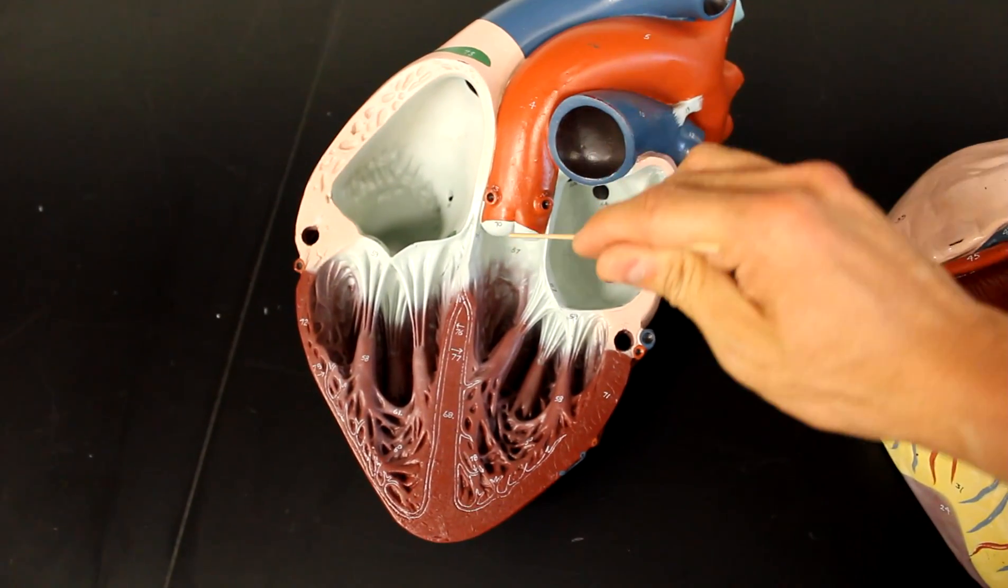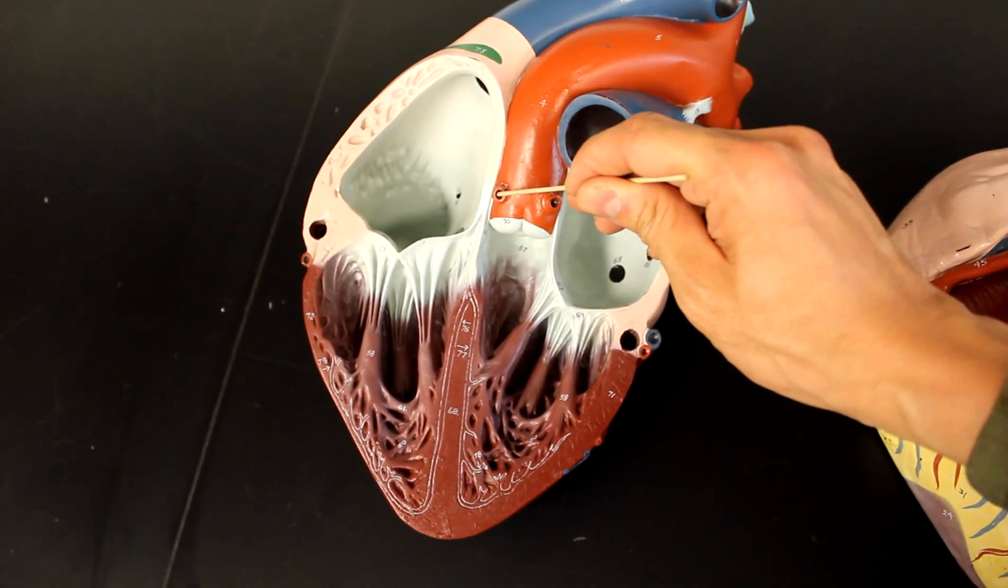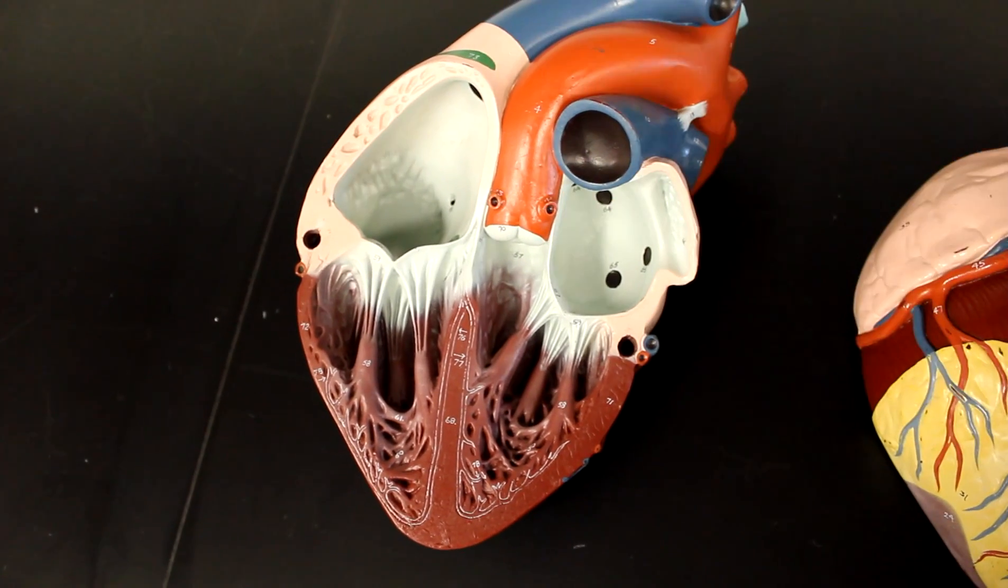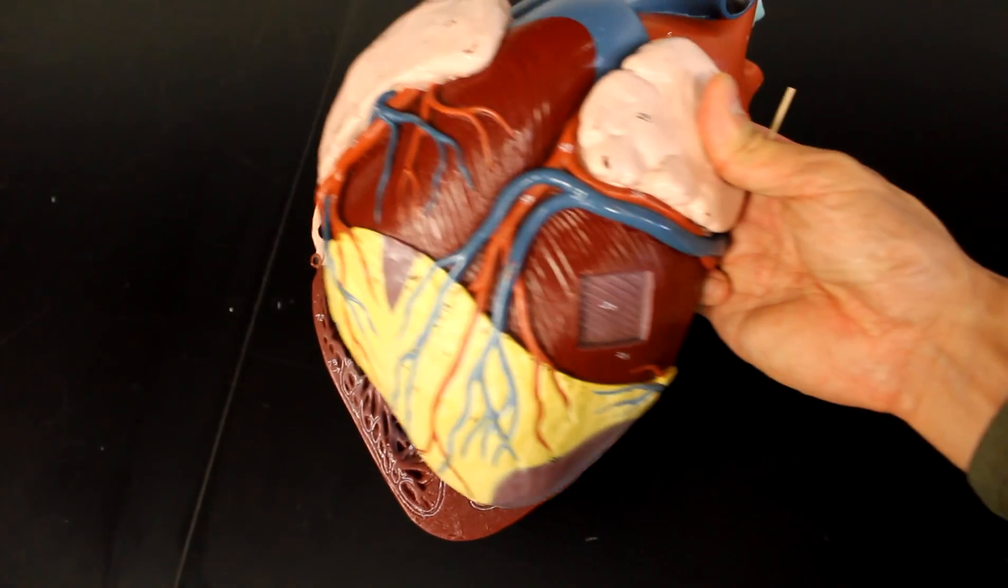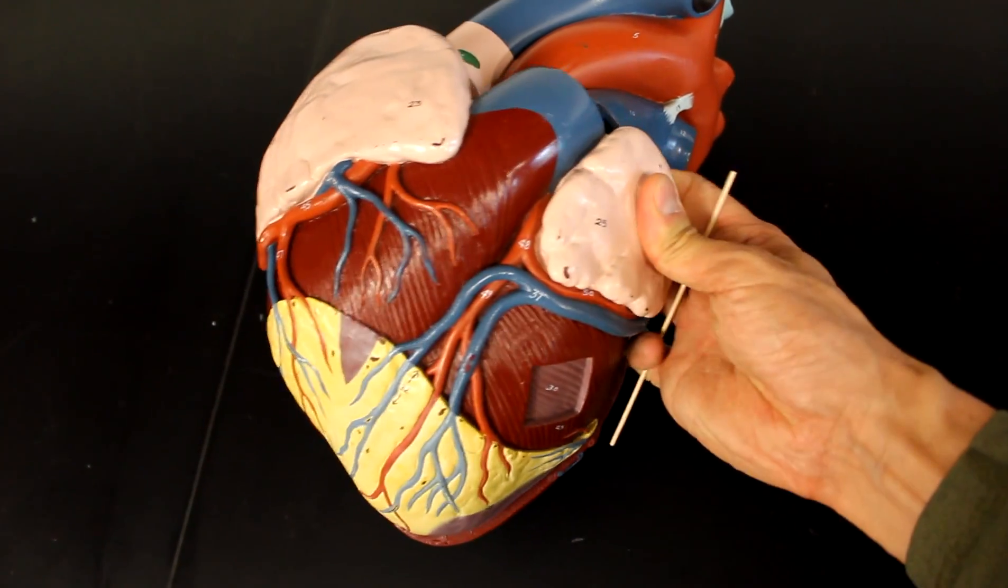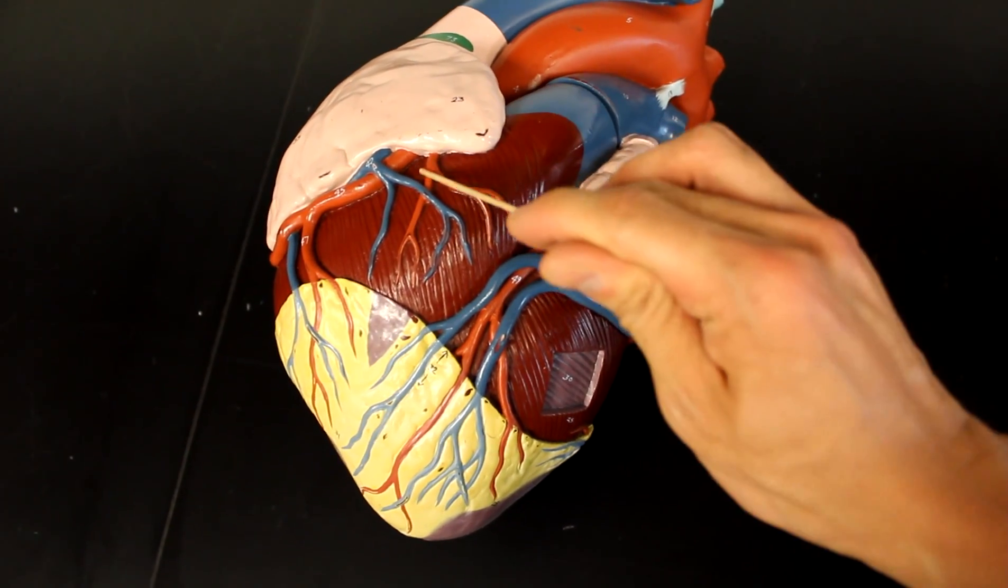If you take a look here, this is the aortic semilunar valve and this is the ascending aorta. The first two branches are the right and left coronary arteries. As you can imagine, the right and left coronary arteries continue their extension onto the myocardium.